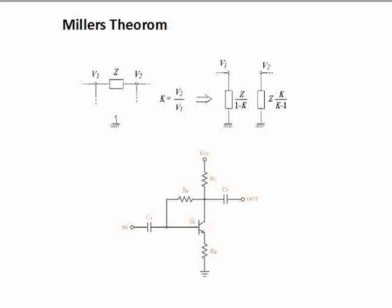Miller's theorem states that if there is an impedance element connected between two nodes in a circuit, this particular circuit can be represented equivalently by dividing it into two separate nodes with an impedance to ground. You can see here there are two nodes V1 and V2 with voltages V1 and V2. There is an impedance element that is connected with common ground of this circuit.